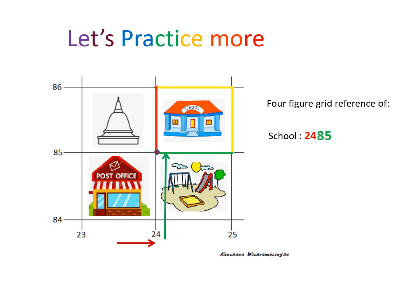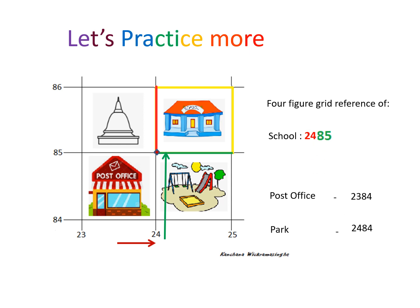Let's work out the four-figure grid references of the post office and the park. What do you think? As for the post office it is 2384, and for the park it is 2484. I hope you worked it out correctly before I told you the answers.